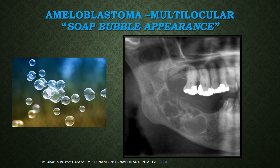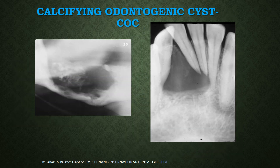A unicystic ameloblastoma can look very much like a dentigerous cyst. The multilocular variant is classically given a soap bubble appearance, with multiple visible locules. This particular lesion is quite extensive — about 5 cm by 3 cm — and involves the mandibular canal very close to the lower border of the mandible. Calcifying odontogenic cysts are less common; they involve the mandible and show specks of radio-opacity within the cystic cavity. When you see these opaque flecks within a unilocular well-defined radiolucency, suspect a calcifying odontogenic cyst in the differential diagnosis.